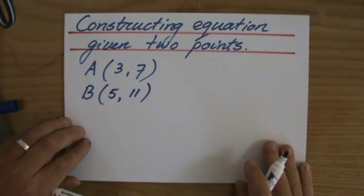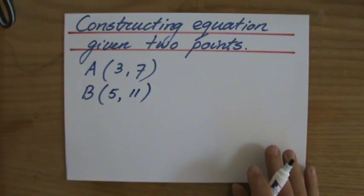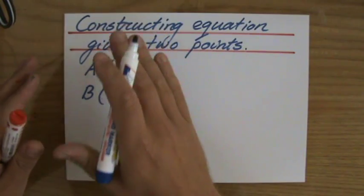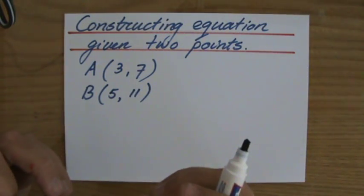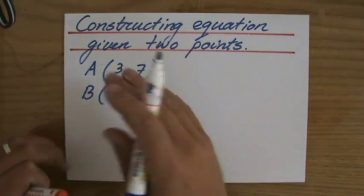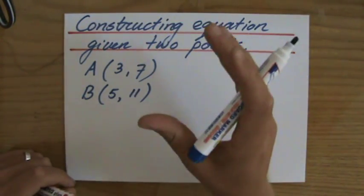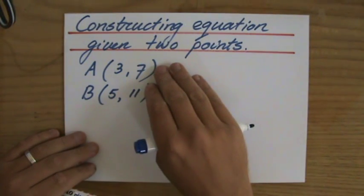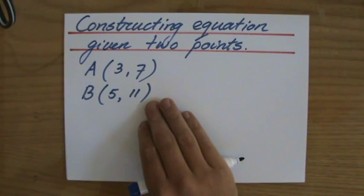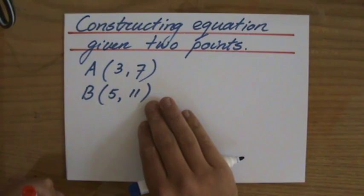Welcome back. This is an example question for you to try first. I'm not going to explain this one in too much detail — you have to look at my previous videos where I explain it. I want you to put the video on pause and try to work out the following question, where you are asked to construct the equation of the line going through these two points: point A (3, 7) and point B (5, 11). Put the video on pause now and try it yourself first.